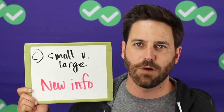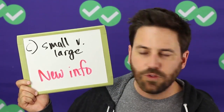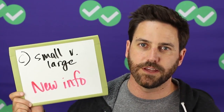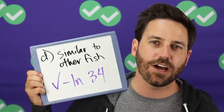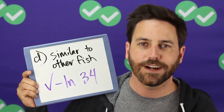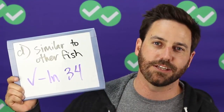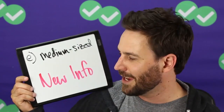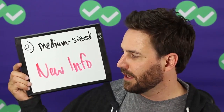Answer choice C talks about whether it's a small group or large group. The passage doesn't go into the size of the schooling group — looking at the fourth paragraph, there's nothing about how big the school is in terms of protecting them from predators. New information, wrong. Answer choice D talks about how the fish are all similar in appearance, which is discussed in line 34 — this is definitely in the passage, so this is our right answer. Answer choice E mentions medium size, but again there's no information about the size of the fish or group in the passage, so it's new information and wrong.